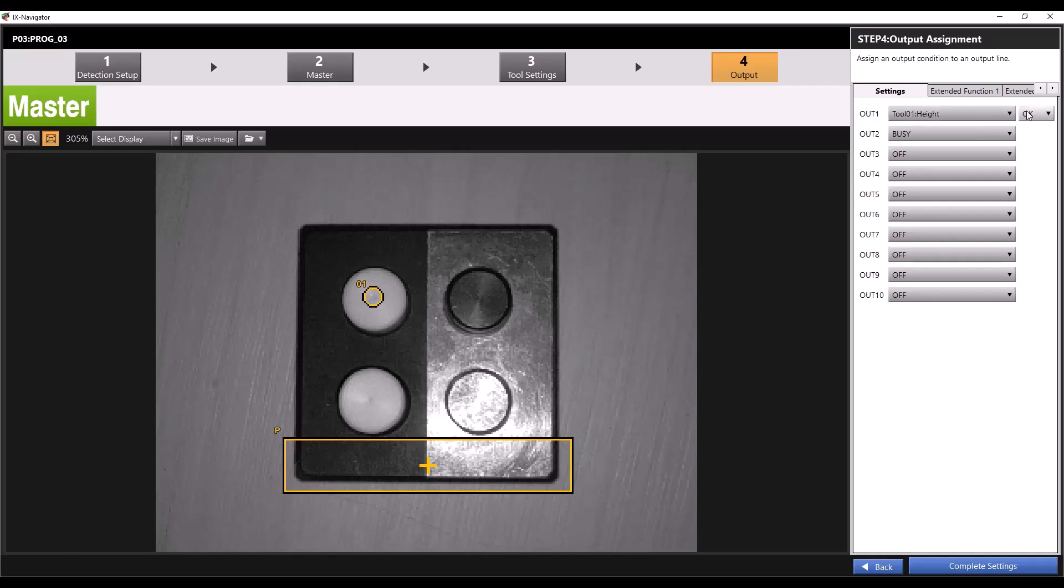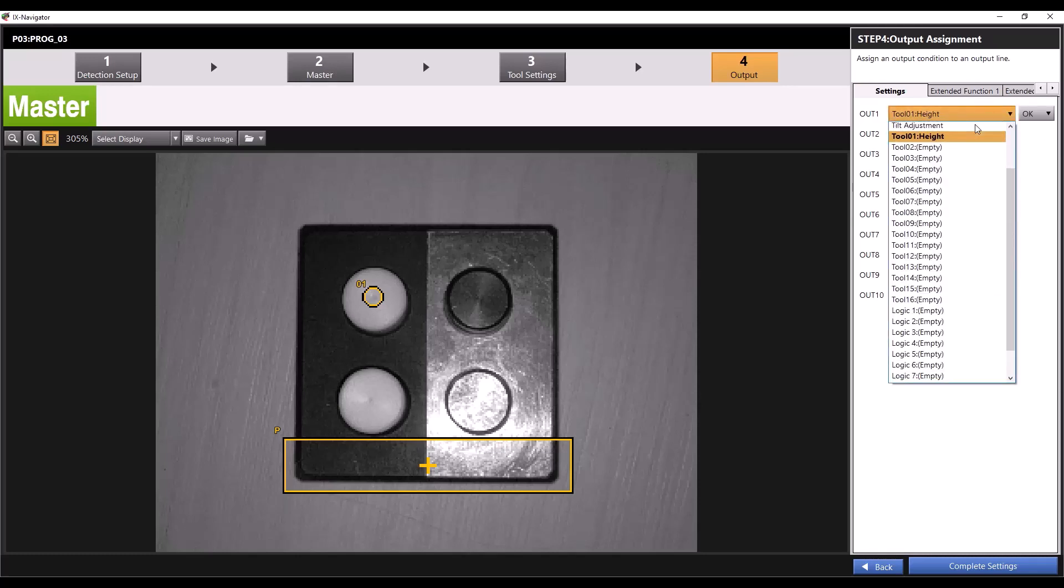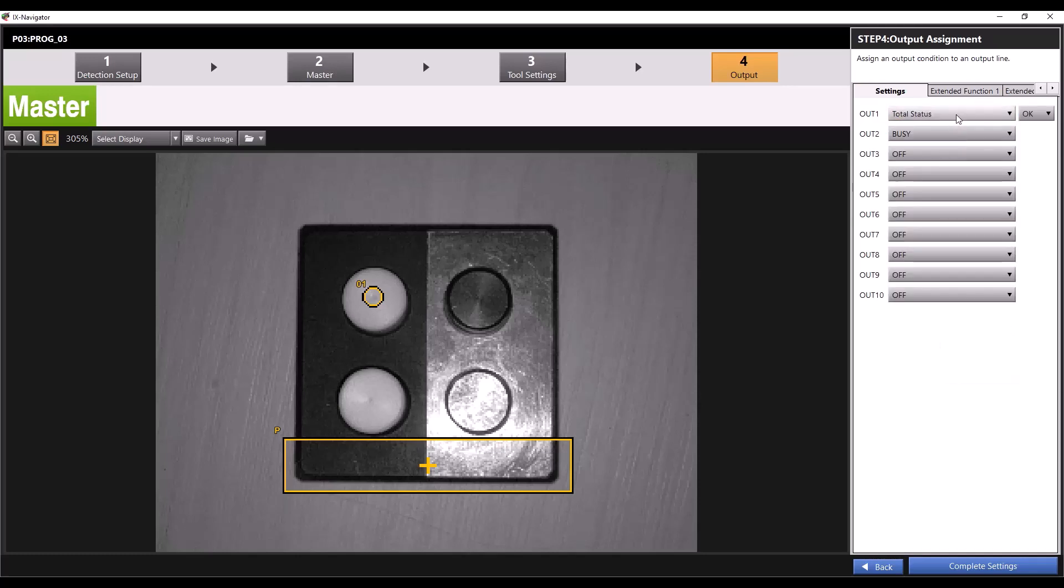In the second dropdown, you have the option to pick between OK and no good. With certain tools, like our height tool here, you'll also have the option to select high and low. Picking high means the output will only turn on if the measurement is higher than the set thresholds. Picking low means the output will only turn on if the measurement is lower than the set thresholds. By selecting NG, the output will turn on when the tool gives any no good reading. For now, I'll set my output 1 to total status OK, because I want to send a signal to turn my light on when a part is good.